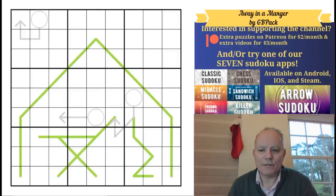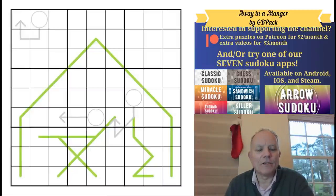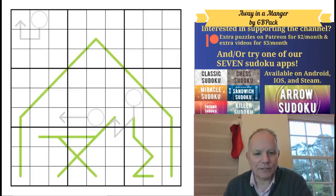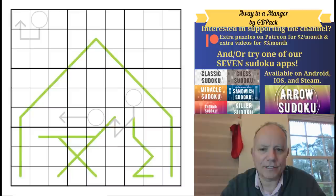Hello, welcome back to Cracking the Cryptic. It's very nearly Christmas and this is a fantastic puzzle from GB Pack, who writes to us as Aaron Rodgers. I think we've established he's not the actual Green Bay Packers quarterback, just a fan. But this is so clever. I love that a couple of simple rules create this incredible picture for a puzzle called Away in a Manger.